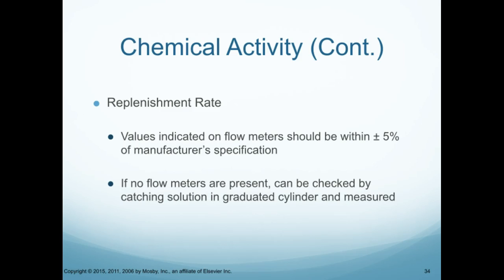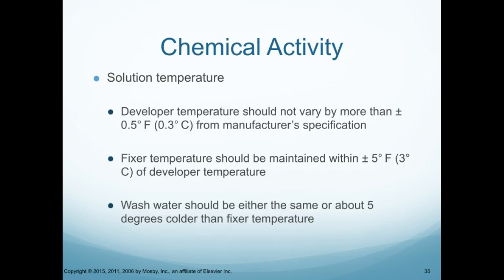The replenishment rate values indicate the flow meters should be within plus or minus five percent of the manufacturer's specifications. If no flow meters are present, it can be checked by catching solution in a graduated cylinder and measuring it. Developer temperature should not vary by more than plus or minus half a degree Fahrenheit from the manufacturer's specification. Fixer temperature should be maintained within plus or minus five degrees of the developer temperature. Wash water should be the same or about five degrees colder than the fixer temperature.